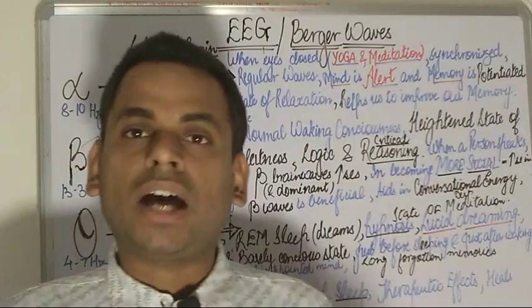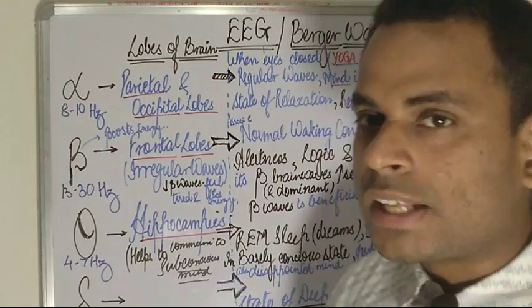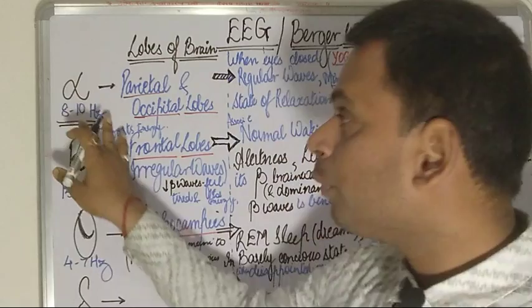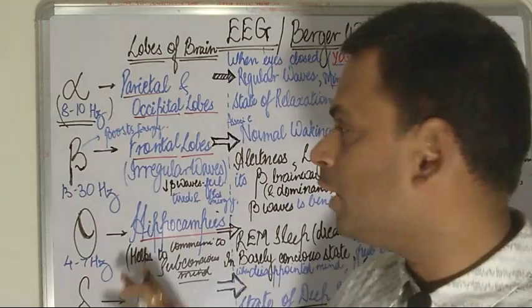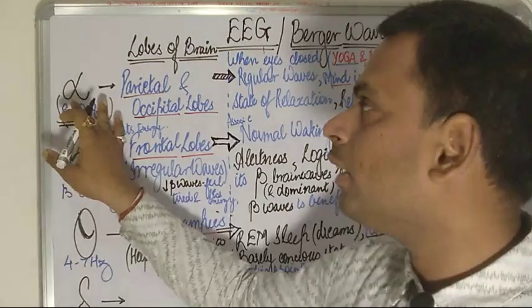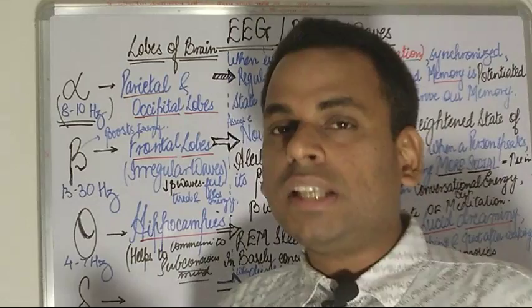Beginning with the first wave produced, it is called the alpha waves. The frequency for alpha waves is between 8 to 10 hertz. The lobes of the brain responsible for alpha wave production are the parietal and the occipital lobes, having a frequency of 8 to 10 hertz.